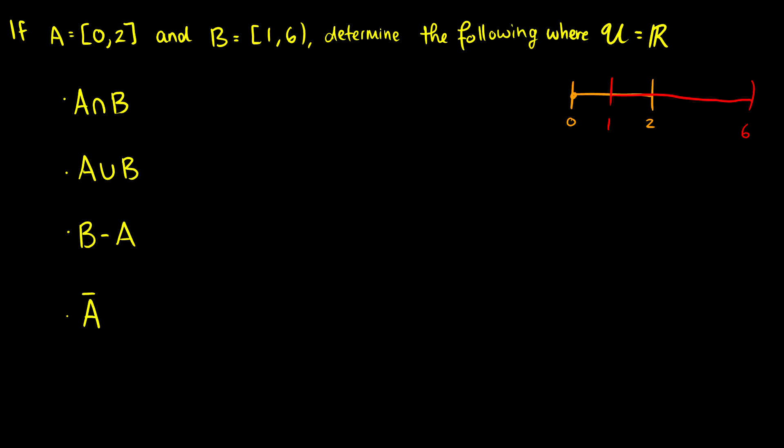And first we want to take a look at A intersection B. So here's the question, which is in both of these? Well we see this overlap here from 1 to 2 and it includes both of those. So our intersection is going to be the set or the interval from 1 to 2 inclusive. So we can see that if X is in A and X is in B, then X is going to be in A intersection B.